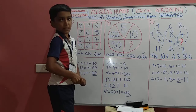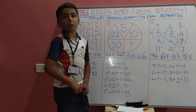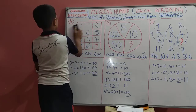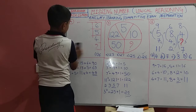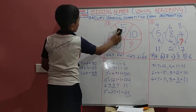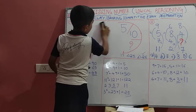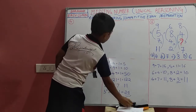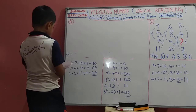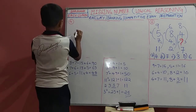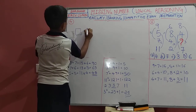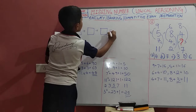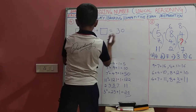Hope you understood all the questions. Now I will give you a homework question. Please go to the next class. The question is: box plus box plus box is equal to 13.